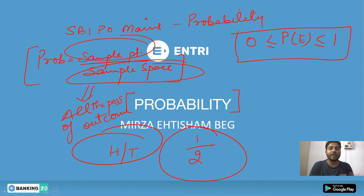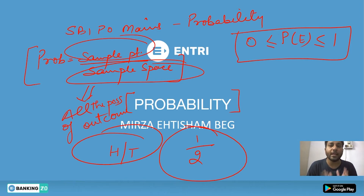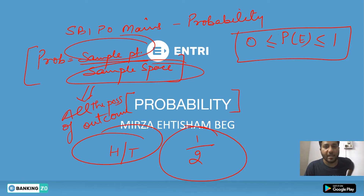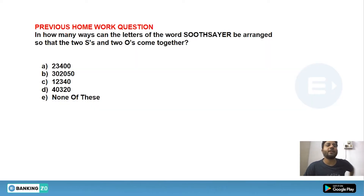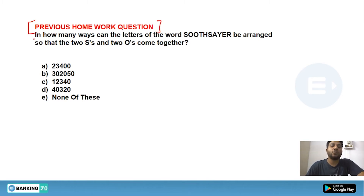So this is a clear idea and short explanation about probability. I hope you have understood it. I have taught this in the foundation course as well as in the RRB crash course. Now let's go ahead — let me give you the previous homework question. I have taught you permutation and combination.